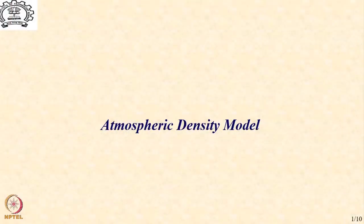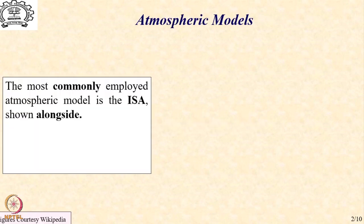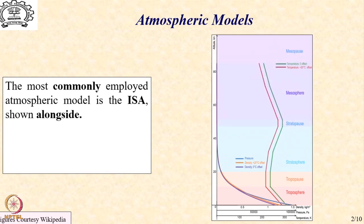In this regard, let us first consider the atmospheric density model. The most commonly employed atmospheric model is the International Standard Atmosphere, which is shown alongside. This model of atmosphere contains three basic parameters: temperature, pressure, and density as a function of the altitude above the surface of the earth.